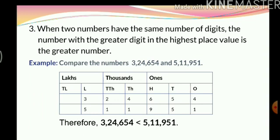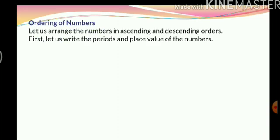I hope you were able to understand these three rules and how we can compare numbers. Now let's try ordering the numbers using the same rules. Ordering of numbers: let us arrange the numbers in ascending and descending order. Descending order is when the numbers are arranged from the greatest to the smallest, and ascending order is when the numbers are arranged from the smallest to the greatest. When numbers are given to you, I always suggest first writing them down in the place value chart.